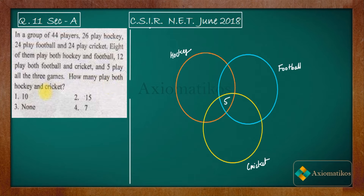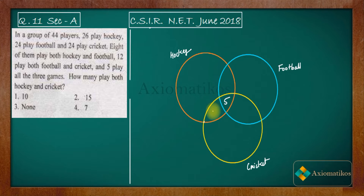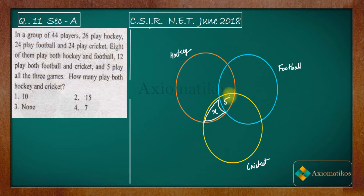What we want is how many play both hockey and cricket — that is their intersection. We will call the number of players who play only hockey and cricket (not all three) as x. So x represents this portion: those who play hockey and cricket but not all three games. We want to find x using another method.